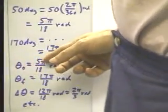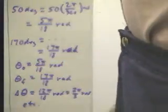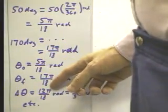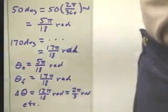We have initial theta is 5π over 18 radians. Final theta is 17π over 18 radians. Our delta theta is from 5π over 18 to 17π over 18, which is 12π over 18 radians, which is 2π over 3 radians.